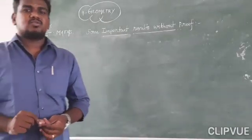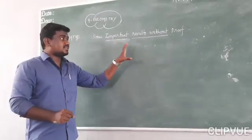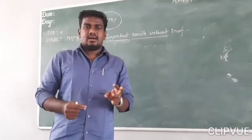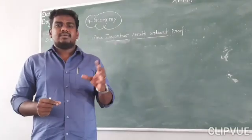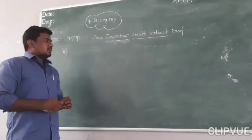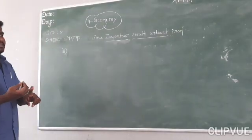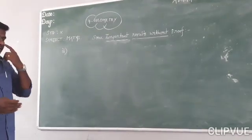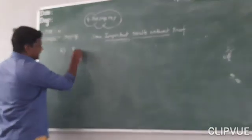Good morning to all, welcome back to my online class. In the previous class we learned some important results without proof — the first one related to area and perimeter. Now we are going to solve: first, A+B cubes; next, if two triangles have the same base; and third, the right angle triangle. So we can start from the right angle triangle.